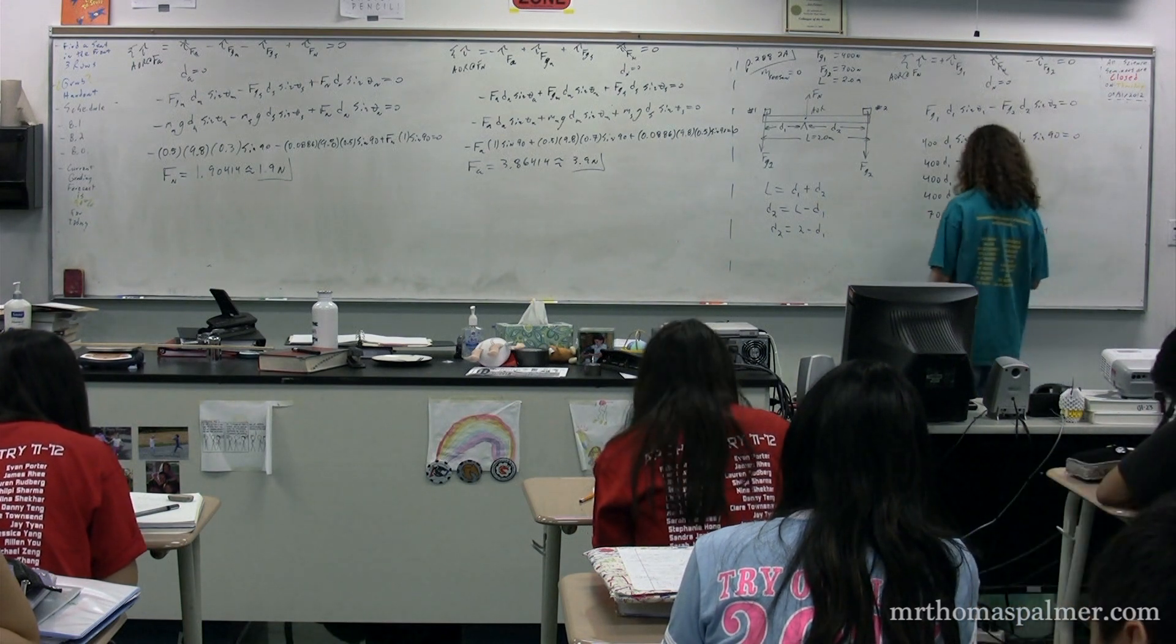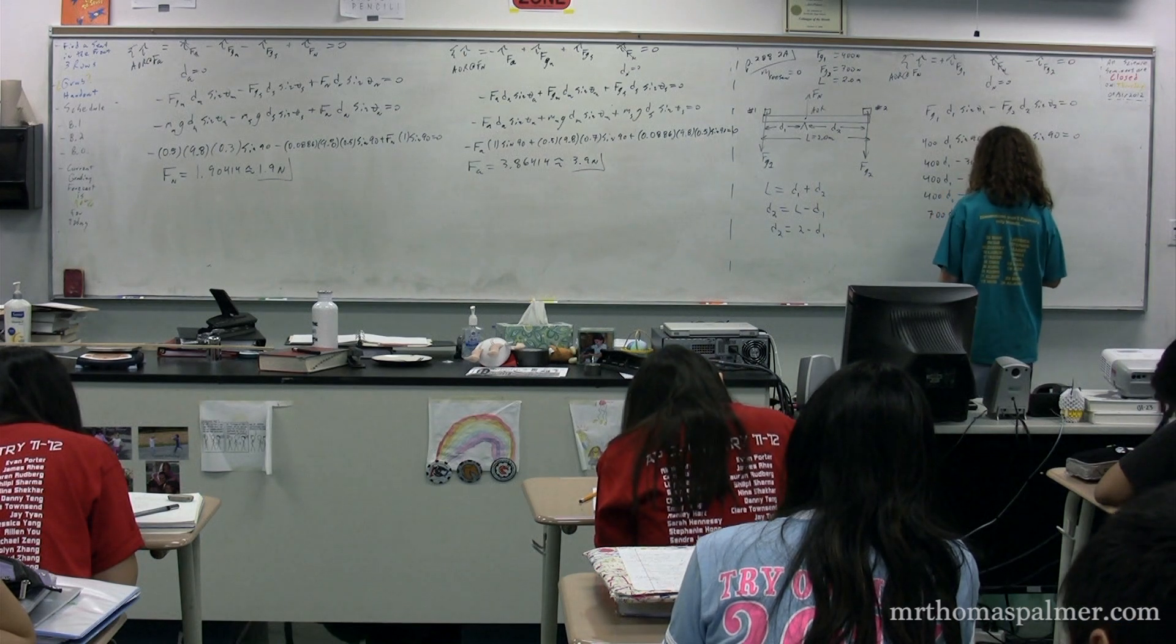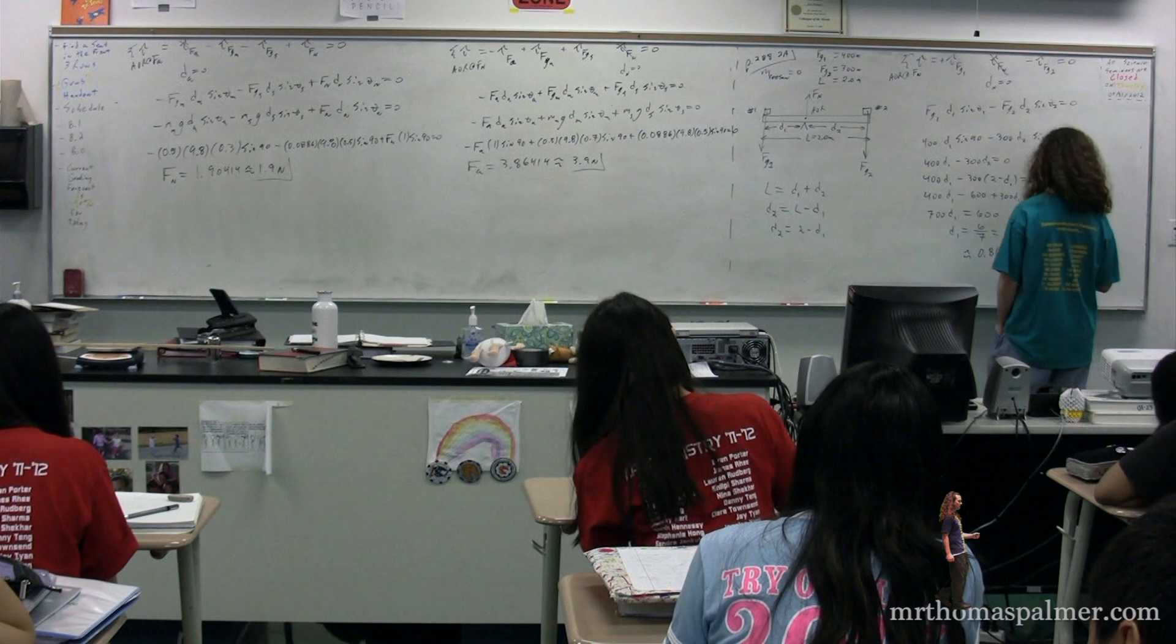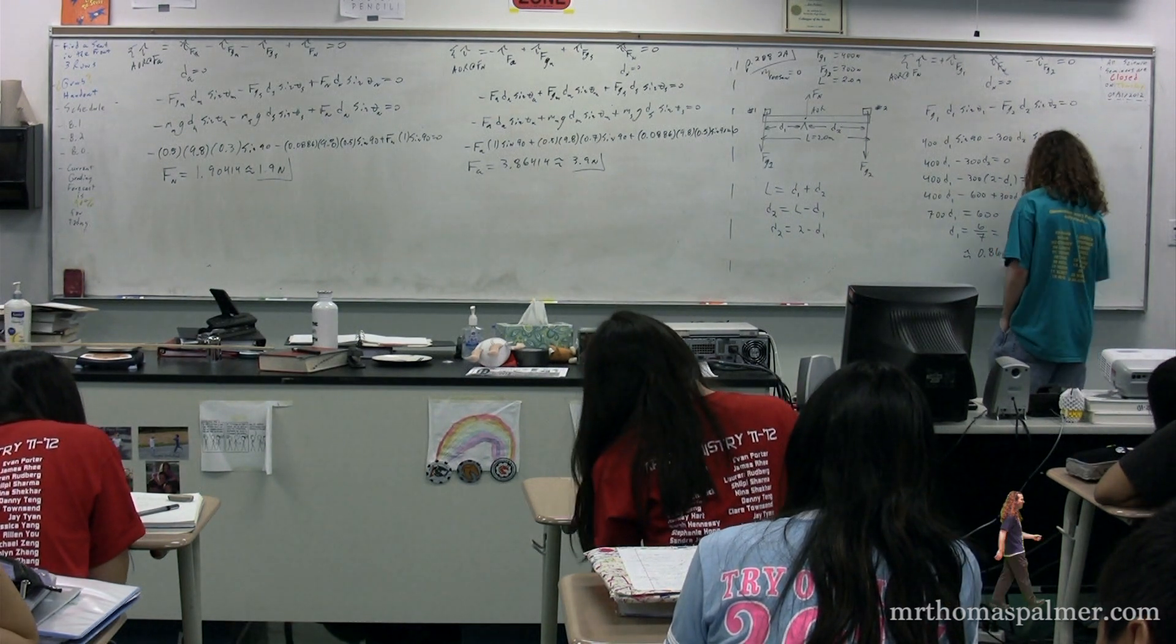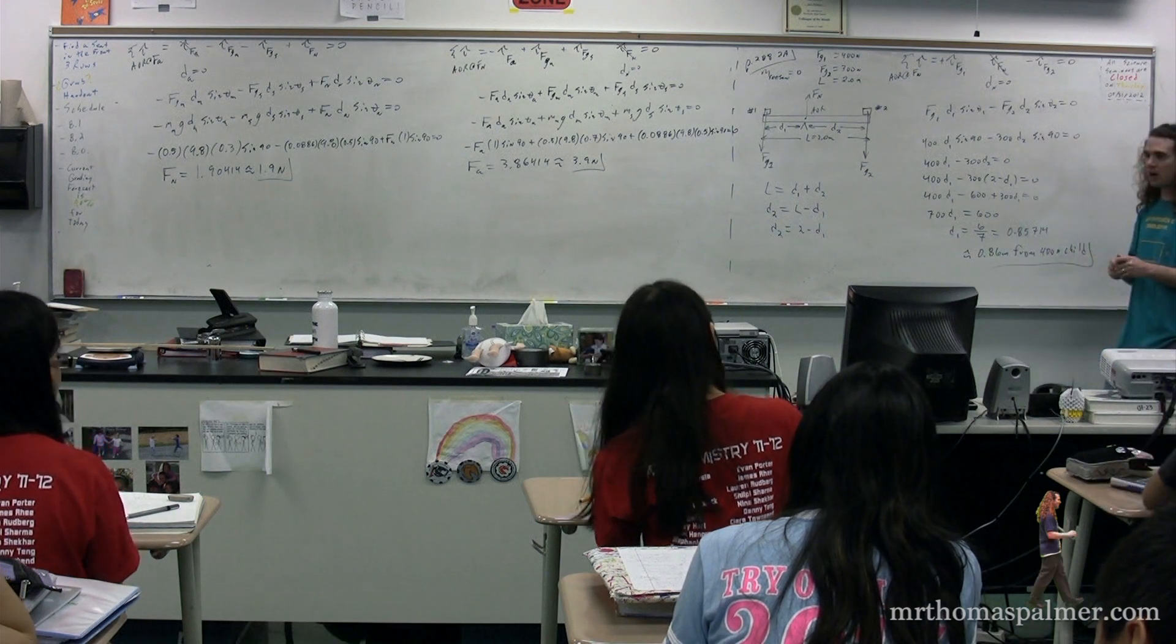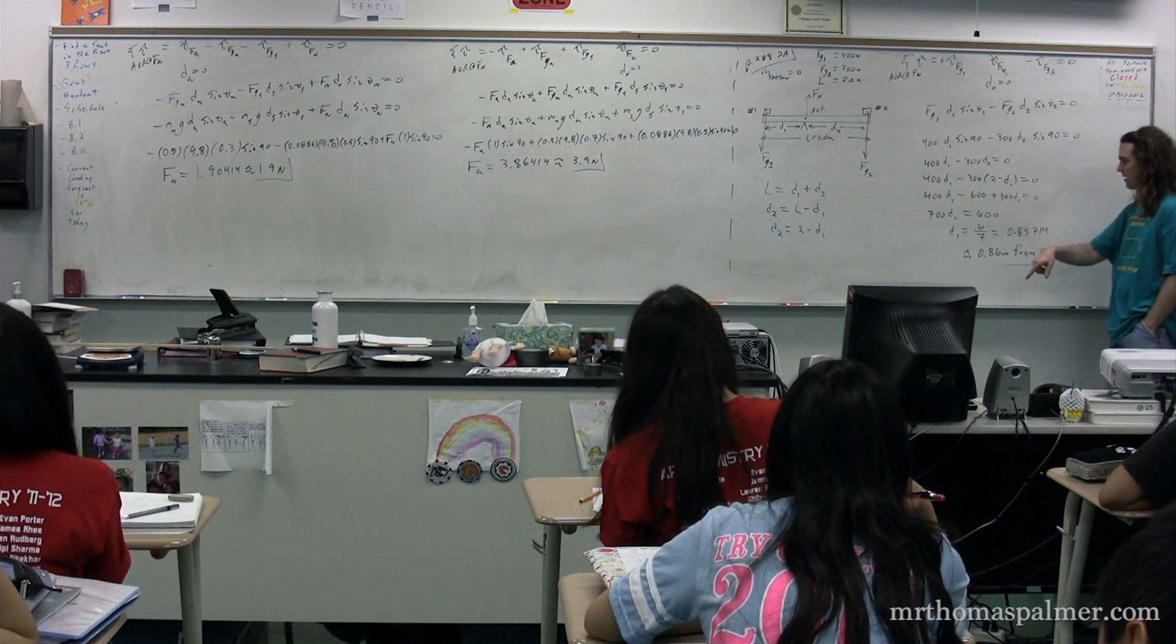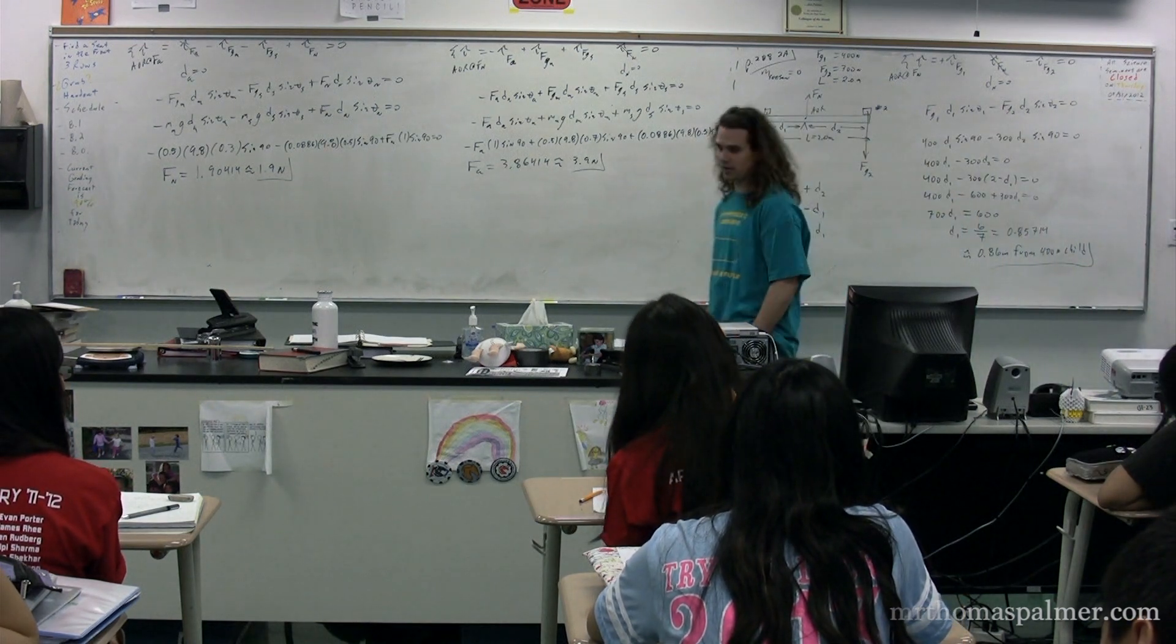And therefore, we need to locate this fulcrum 0.86 meters from the, which one? The 400 Newton child. Notice, you have to identify which child you are measuring from, because if we had solved for the other one, we would have gotten two minus 0.86. And it would be that distance from 300 Newton child.